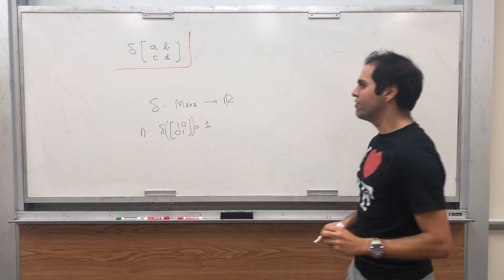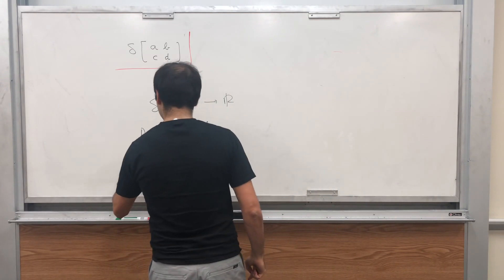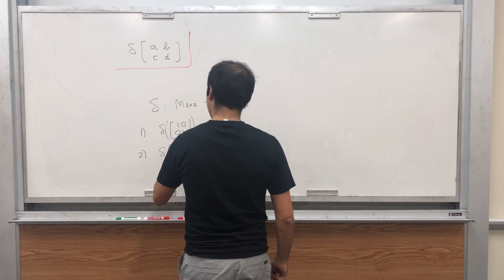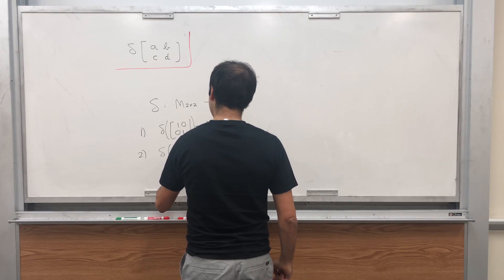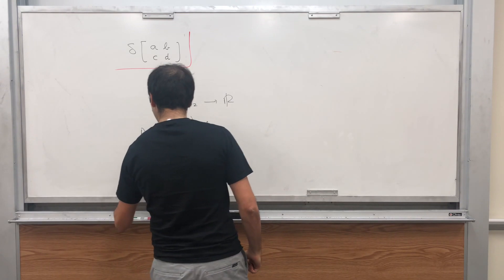The value of delta at the identity matrix is 1, and if two rows of your matrix are equal, like A, B, A, B, then the value is 0.